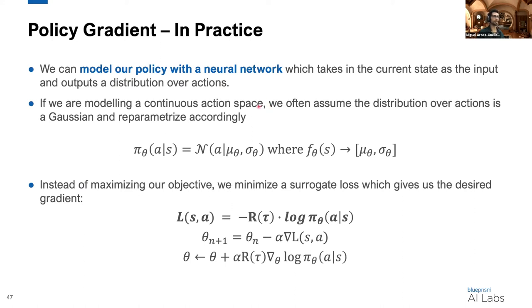It's often an assumption that we'll model it with a Gaussian distribution, and we can reparameterize our network accordingly. In that case, our network would output a mean and a variance. This can obviously be extended to multiple dimensions as well if we have a more complex action space.